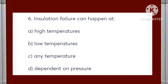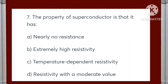Insulation failure can happen at: high temperature, low temperature, any temperature, or depends on pressure? Answer is A — high temperatures. The property of a superconductor is that it has: nearly no resistance, extremely high resistance, temperature dependent resistivity, or resistivity with a moderate value? Answer is A — nearly no resistance.